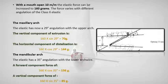With the mouth open 10 millimeters, the elastic force can increase to 160 grams. The force varies with different angulation of the Class 2 elastics. In the maxillary arch, the elastic now has a 29-degree angulation with the upper arch; the vertical component of force will be 70 grams and the horizontal distalization component will be 144 grams. In the mandibular arch, the elastic has a 35-degree angulation with the lower arch wire; the forward component of force will be 136 grams and the vertical component of force will be 85 grams.